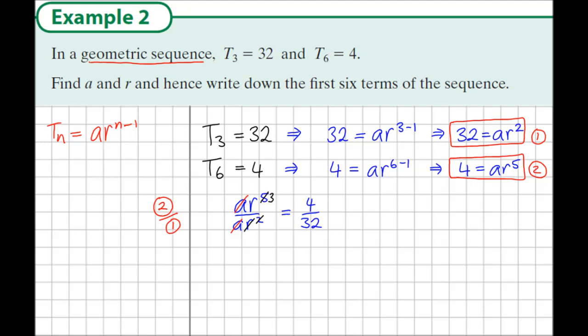Also 4 goes into 4 once, and 4 goes into 32 eight times. So let's just write this out neatly now. This tells us that r³ = 1/8.